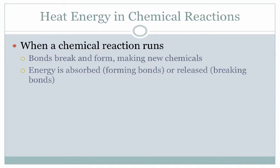So let's get a little more specific now and talk about how heat energy is then used in chemical reactions. When a chemical reaction runs, two things happen. We get bonds breaking and new bonds forming. And this process of breaking and forming bonds is what forms new chemical products from our original reactants. What we have not talked about so far this year, which is really what today is all about, is that energy is absorbed when you form bonds or released when you break bonds during this process.